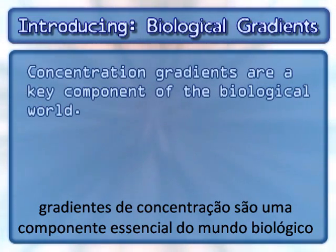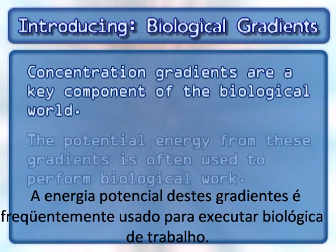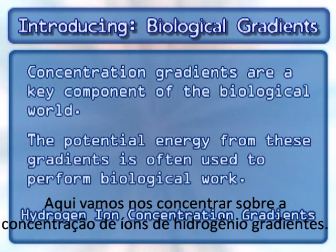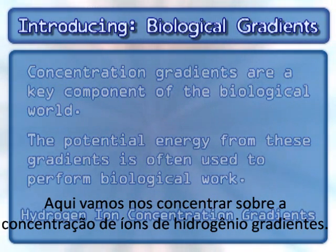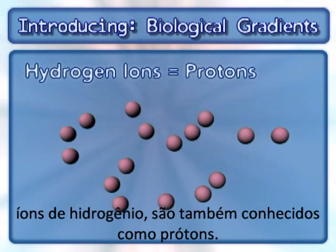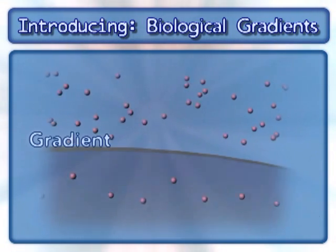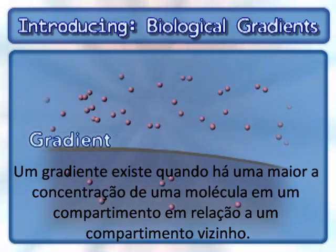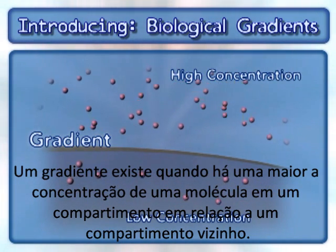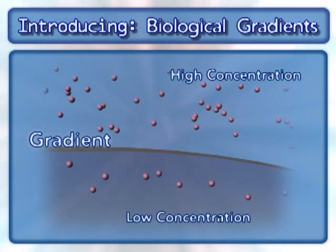Concentration gradients are a key component of the biological world. The potential energy from these gradients is often used to perform biological work. Here we will focus on hydrogen ion concentration gradients. Hydrogen ions are also known as protons. A gradient exists when there is a higher concentration of a molecule in one compartment compared to a neighboring compartment.